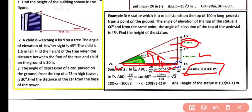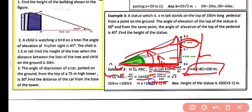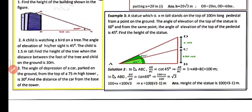Continuing Example 3: In triangle ABD, BD/AB = tan 60°, so (100 + x)/100 = √3. After simplifying, x = 100(√3 − 1) meters. Therefore the height of the statue is 100(√3 − 1) meters.